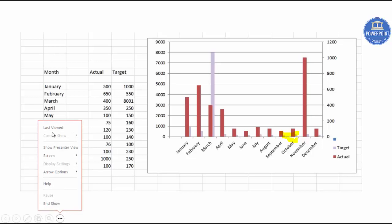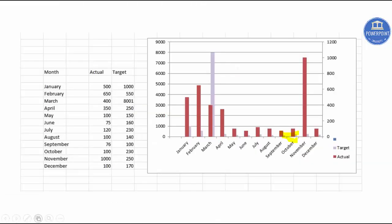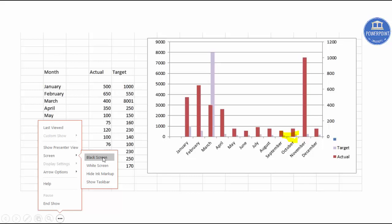The last feature: if you go here you'll see 'last viewed' and 'show presenter view.' The presenter view is a very good feature when you are presenting — you can see what the next slide is going to be, and if you have added any notes, they will be displayed there too. If you want to hide the presenter view, just go to that option and select 'hide presenter view.' Also, if you are in a meeting and don't want the slide to be visible for a certain period, you can use the screen option.